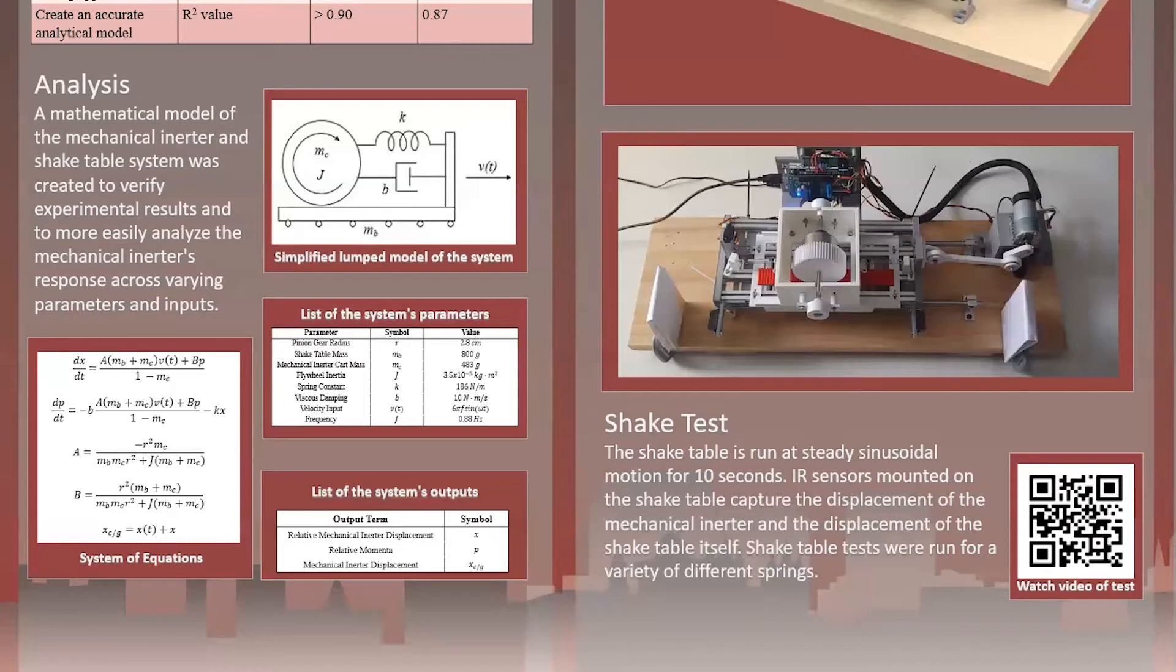And then the output of interest, XC slash G, is the displacement of the mechanical inerter with respect to ground. It's simply the integral of the velocity input plus X. And the list of parameters used in the final design is shown in this middle table.